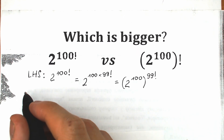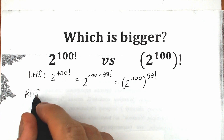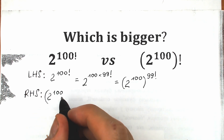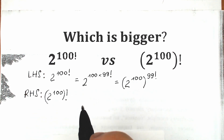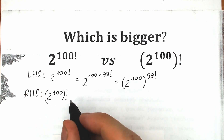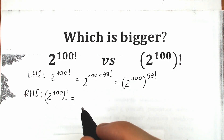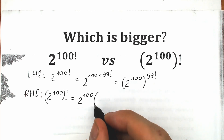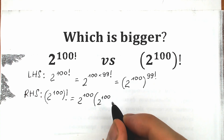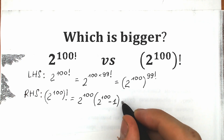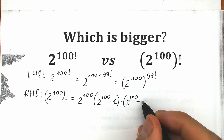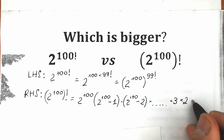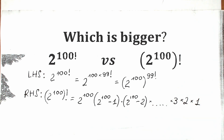Now let's look closely at our right-hand side. We have the expression 2 to the power 100, and we have factorial here. Everyone should know that factorial can be rewritten as a product from 1 up to that number. So applying this classic factorial rule, this will be equal to 2 to the power 100, times 2 to the power 100 minus 1, times 2 to the power 100 minus 2, all the way down to 3, times 2, times 1.